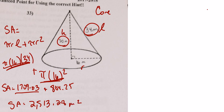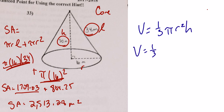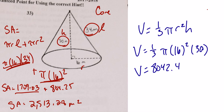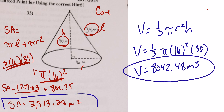Volume of the cone = (1/3)πr²h. Radius = 16, height = 30. Plugging into the calculator: volume ≈ 8,042.48 cubic meters. That's the surface area and volume for number 33.